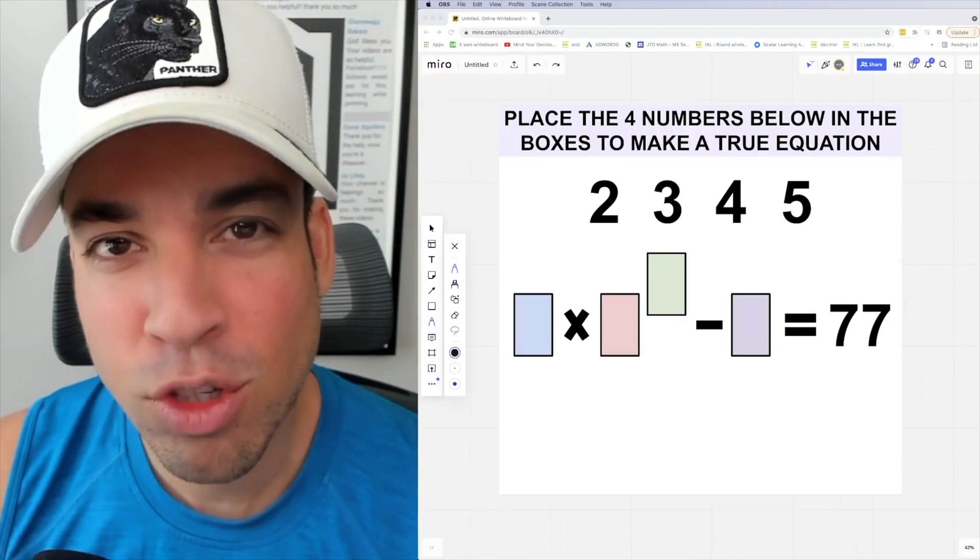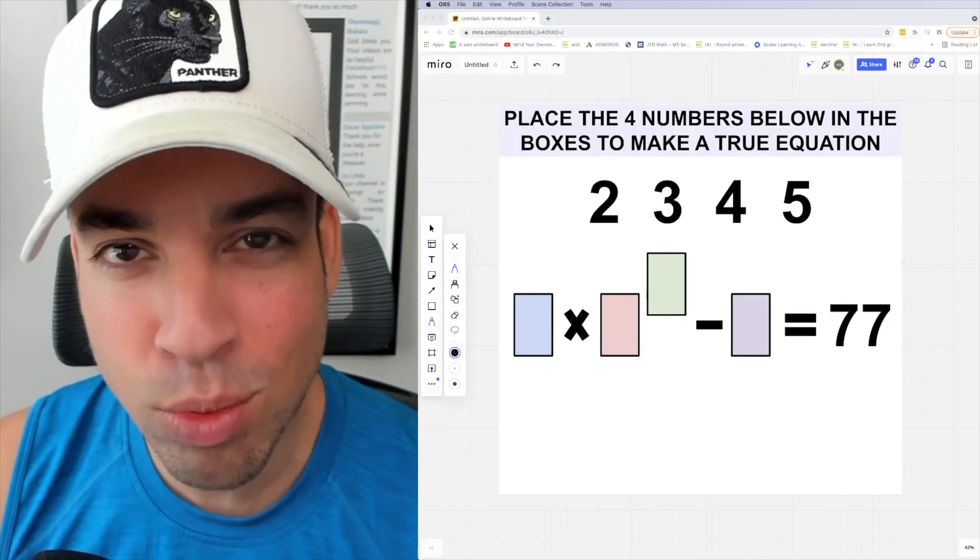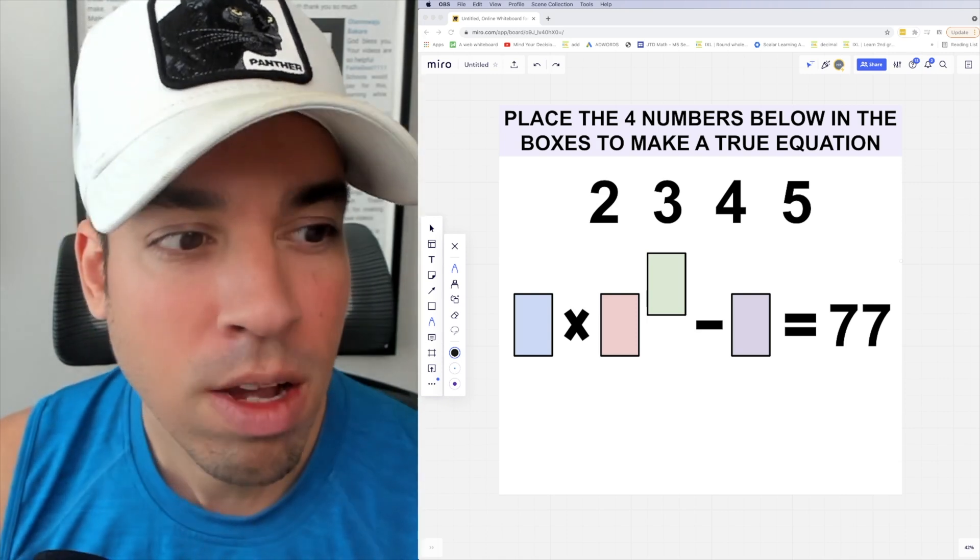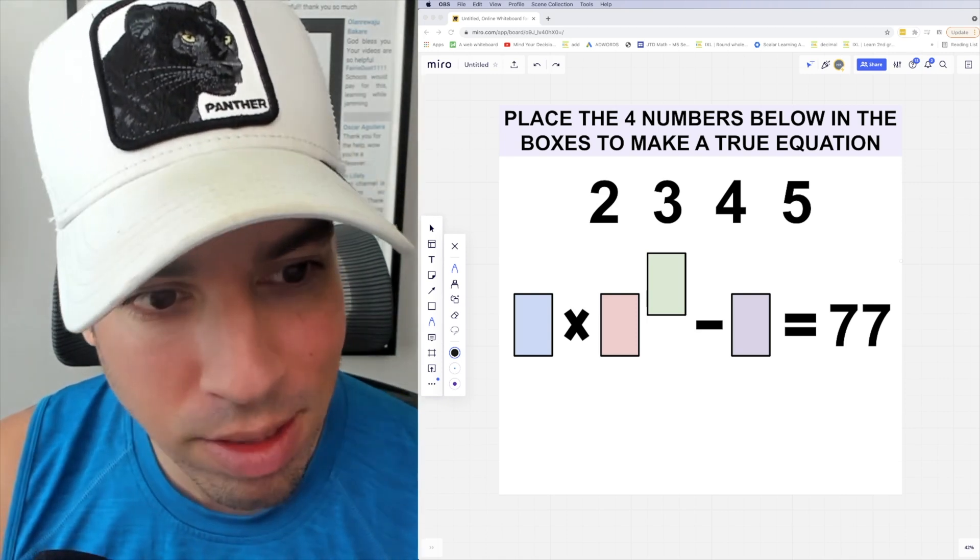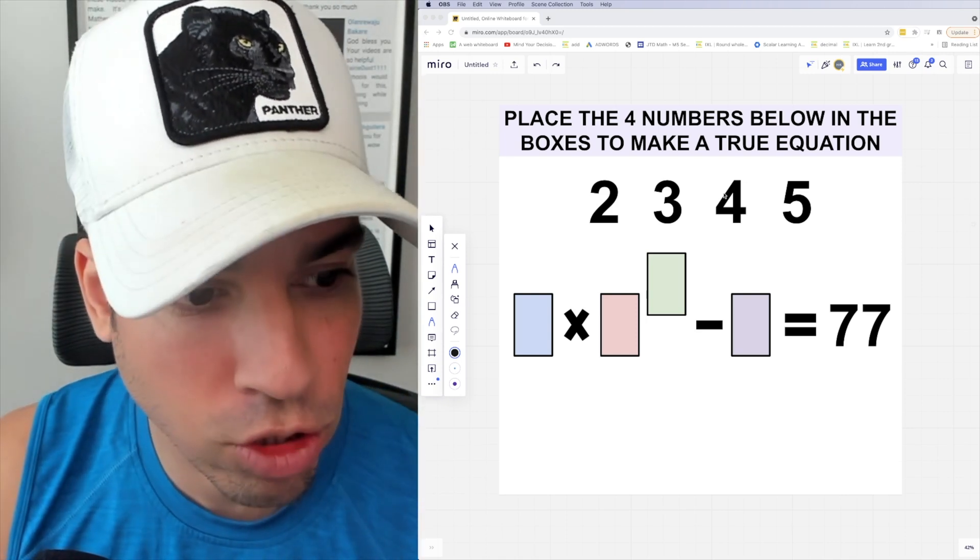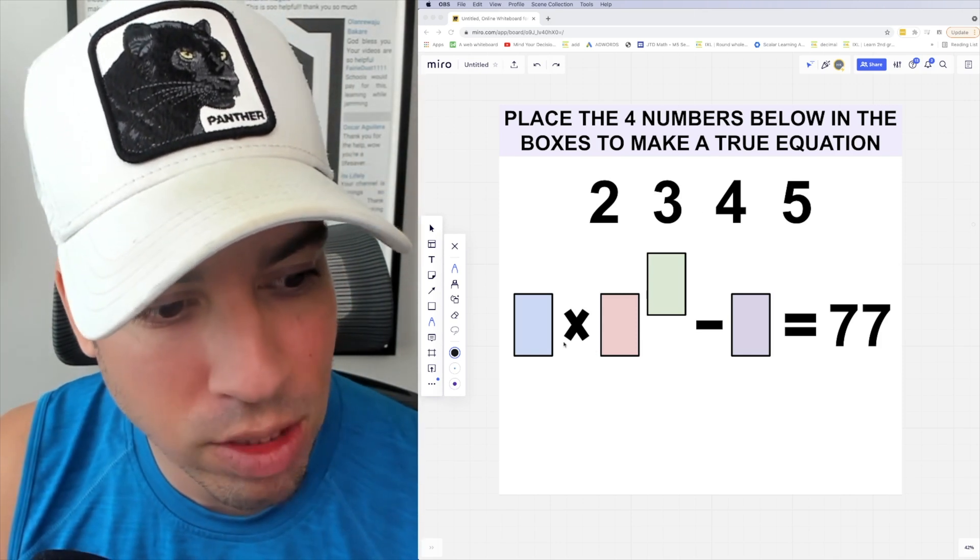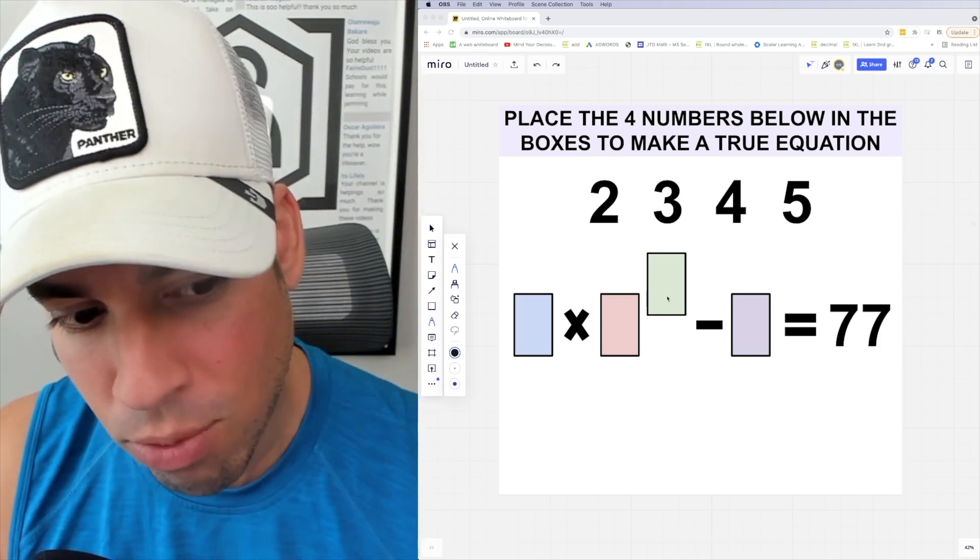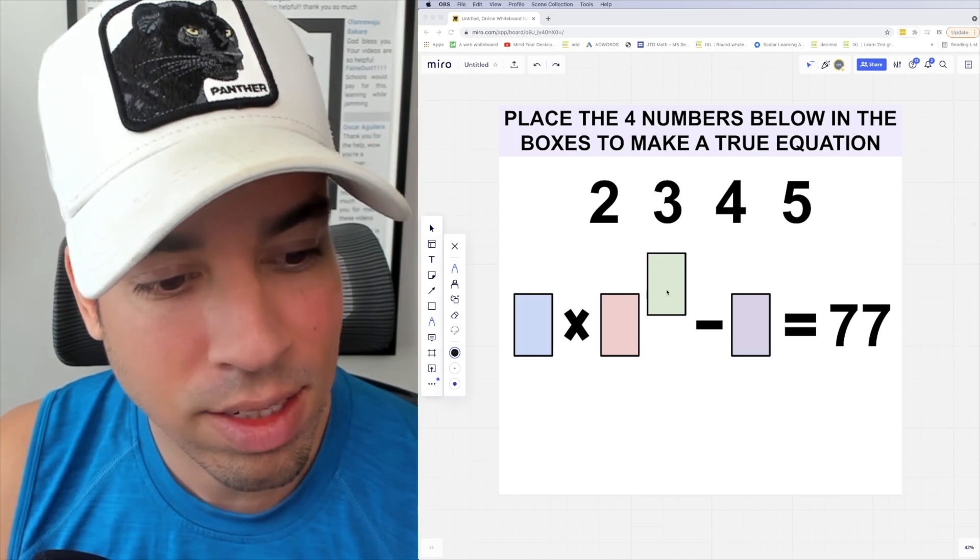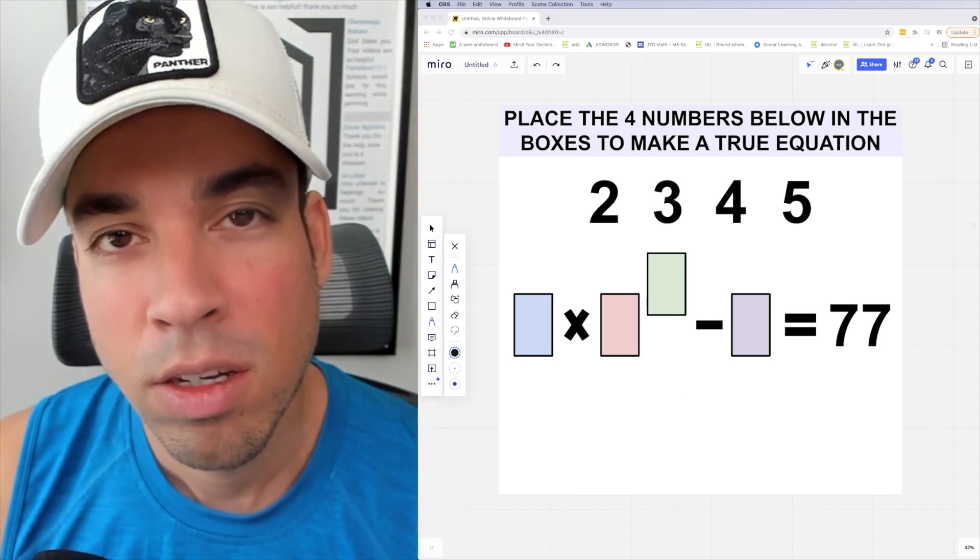What's up everybody and welcome back to another math puzzle. In this one, the question is as follows: place the four numbers below in the boxes to make a true equation. So you got two, three, four, and five going into the colored boxes. And just FYI, the green is an exponent for the red.